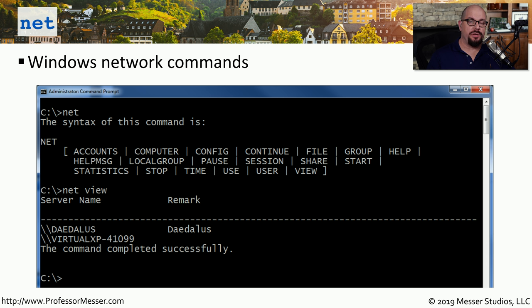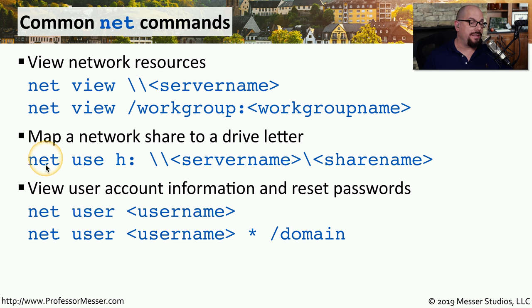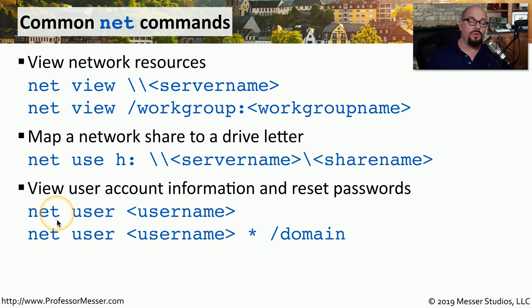So far we've looked at a number of network troubleshooting commands specific to IP that work across many different operating systems. But there is a utility to gather information specifically from Windows devices — the net command. This command is very specific to the Windows operating system. For example, the net view command lets you view resources on a remote device; the syntax is net view followed by two backslashes and the name of the server, with an optional workgroup name. You can map a drive to one of those resources using the net use command, specifying a drive letter followed by two backslashes, the server name, a backslash, and the share name. The net user command is used to view user account information and perform administrative functions such as resetting passwords; its syntax is net user followed by the username.